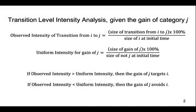Transition level intensity analysis examines the transitions from one category at the initial time to a different category at the final time. Given the gain of a particular category, we compare the output from these two equations. The first equation is the observed transition intensity, which is the size of the transition of the gaining category divided by the size of the losing category at the initial time. If the first category were to gain with uniform intensity across the entire area, then the second equation would be the transition intensity we would observe. Transition level intensity analysis compares the observed intensity to the uniform intensity for each transition of a gaining category.